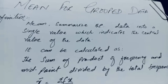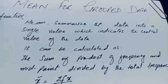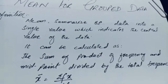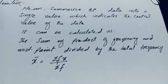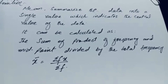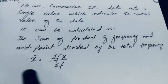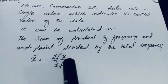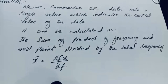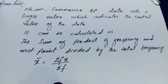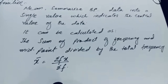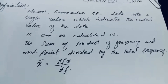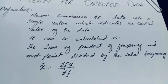It can be calculated as the sum of the product of frequency and midpoint divided by the total frequency. The formula is: x̄ equals summation of fx divided by summation of f.